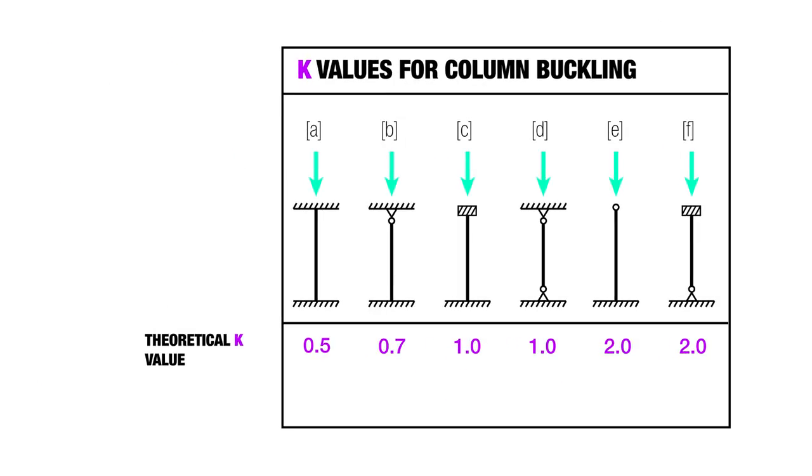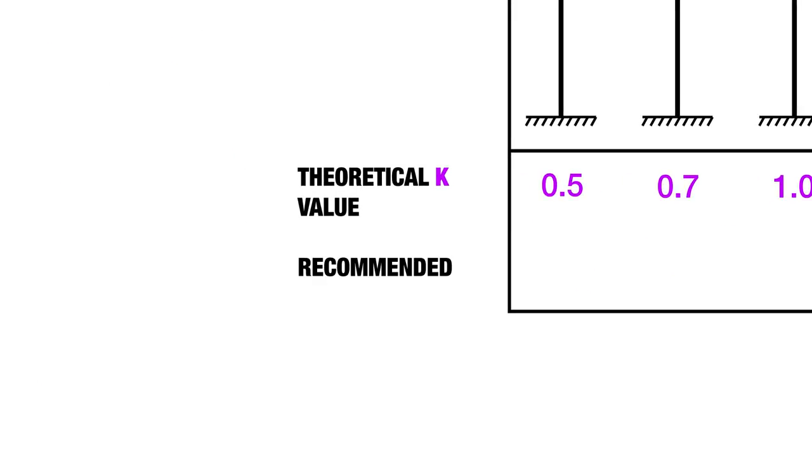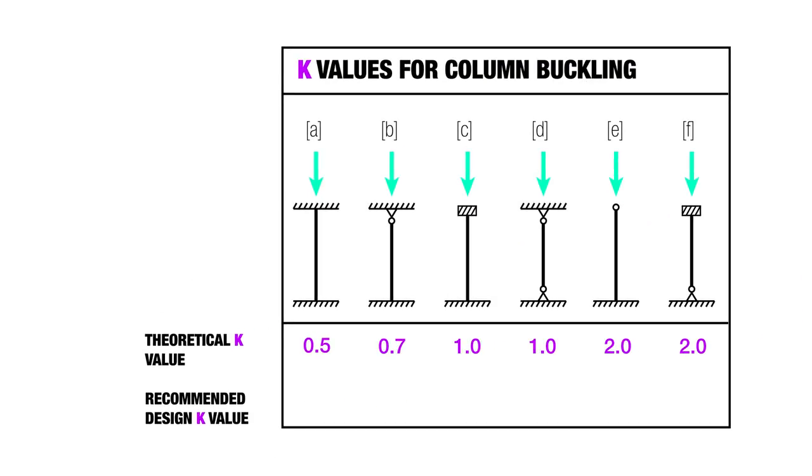Now right below that theoretical K value, there's another line that says recommended design value when ideal conditions are approximated. And that basically means we're talking about wood. So the theoretical K value can pretty much work if we're talking about something like steel that's pretty consistent, maybe even concrete that's pretty consistent. But wood is kind of weird. It's got knots and it's got wings and checks and cups and no piece of wood is perfect. No two are the same. So in this case, we're actually in some of these situations, we're gonna have a slightly larger recommended K value for wood.